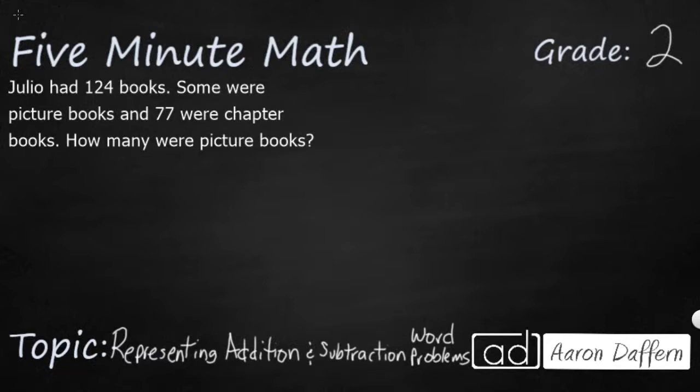So we have a word problem on the screen. We see that Julio had 124 books, some were picture books, and 77 were chapter books. So you see, we're not really quite sure how many picture books there are. That's the question we're trying to solve.